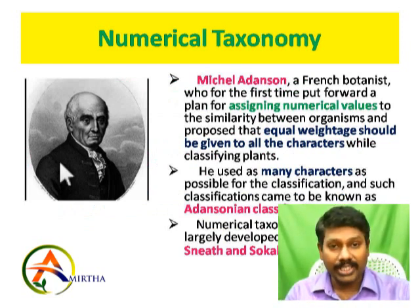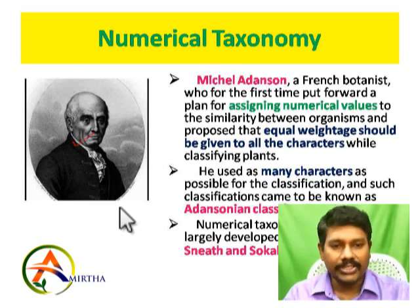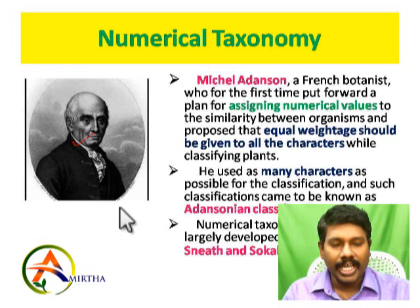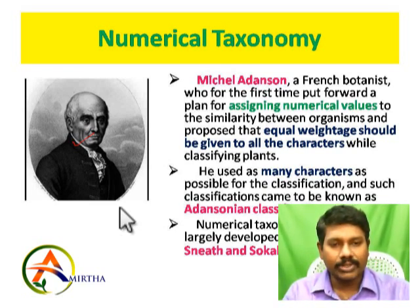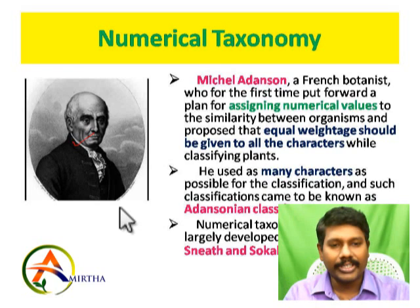Michael Adamson, who is a botanist, was the first to assign a numerical value. If you have a plant and its characters are positive and similar, similar characters get the same numerical value — plus one for similarity and minus one for difference. That means one numerical value is assigned per character.